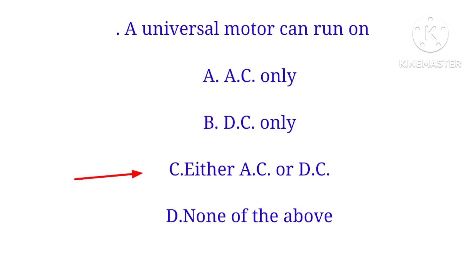A universal motor can run on both AC and DC. The correct option is either AC or DC.